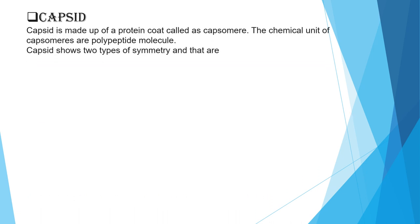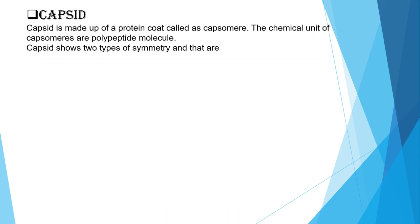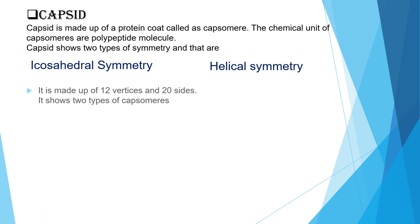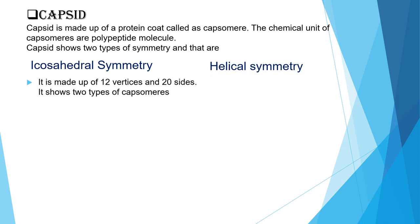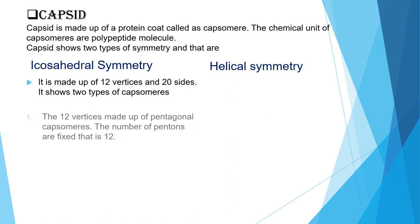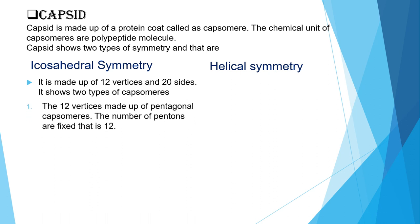Capsid is made up of protein units called capsomers. The chemical units of capsomers are polypeptide molecules. Capsid shows two types of symmetry: icosahedral symmetry and helical symmetry. Icosahedral symmetry is made up of 12 vertices and 20 faces, and it shows two types of capsomers — pentons and hexons. The 12 vertices are made up of pentagonal capsomers called pentons, and the number of pentons is fixed at 12.